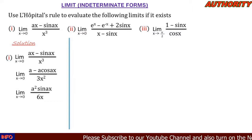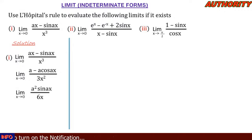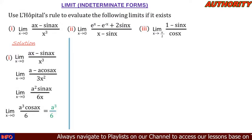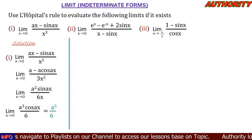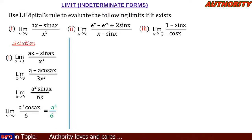Plugging in our value: sin(0) gives us zero, so we still have 0/0. That means we differentiate again. Differentiating again, we get lim as x approaches zero of a³·cos(ax) / 6. Plugging in x = 0: cos(0) = 1, so we get a³/6. Therefore, using L'Hôpital's rule, lim as x approaches zero of (ax - sin(ax)) / x³ = a³/6.